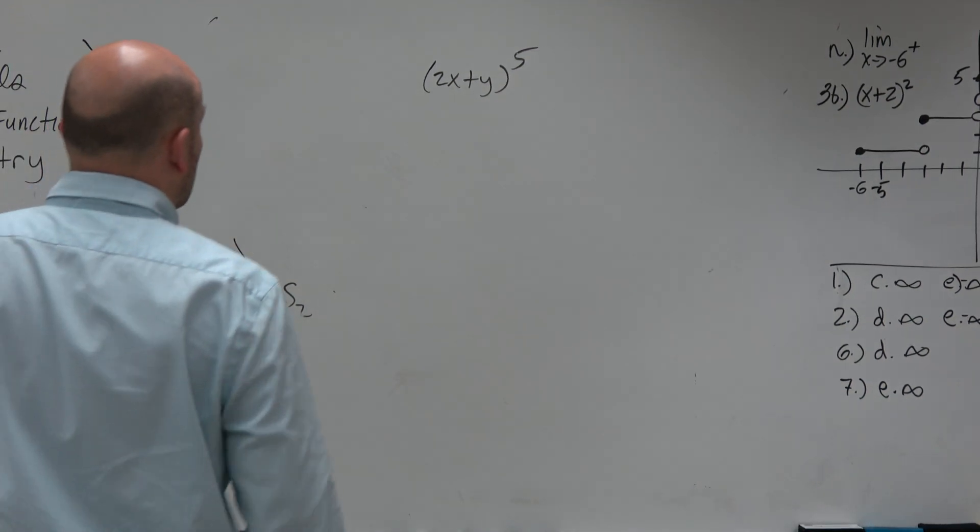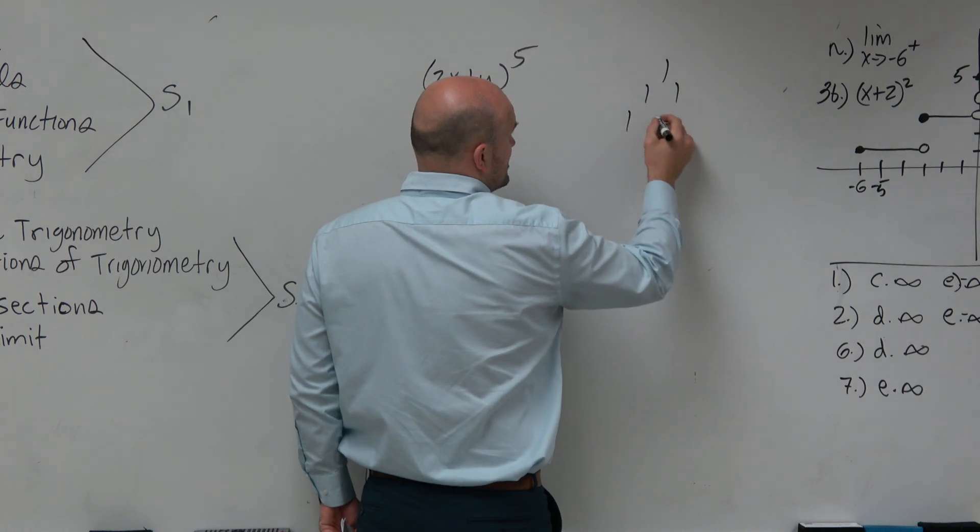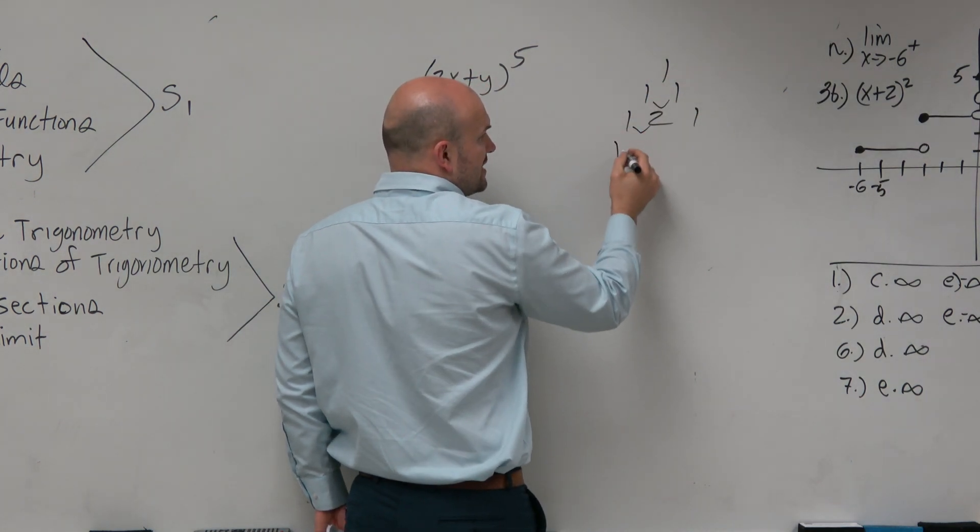When you're doing the binomial expansion, I think one thing that's important is Pascal's triangle. Remember, you can keep on adding the rows. The sum of them is going to give you that term.